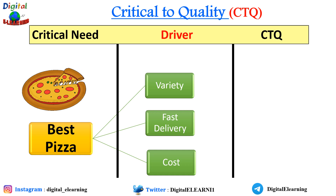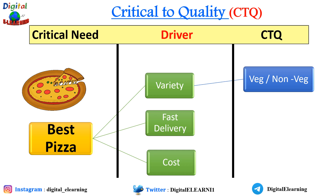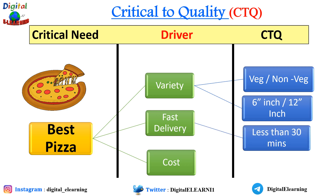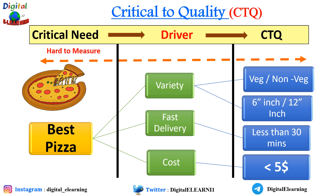For each driver we list the CTQs. For variety: veg and non-veg categories of pizza, and six-inch and twelve-inch size options. For fast delivery: it should be delivered in less than 30 minutes. For cost: it should cost less than five dollars. My original need was 'best pizza,' which was hard to measure, but now I have converted that need into something measurable — that is the whole purpose of CTQ.